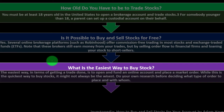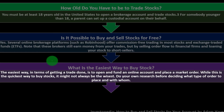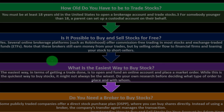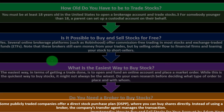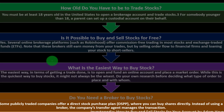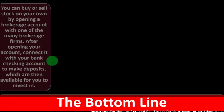What is the easiest way to buy stock? The easiest way to get a trade done is to open and fund an online account and place a market order. While this is the quickest way, it may not always be the wisest — do your own research before deciding what type of order to place and with whom. Do you need a broker to buy stocks? Some publicly traded companies offer a DSPP where you can buy shares directly; the company's transfer agent manages the transaction.